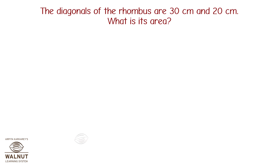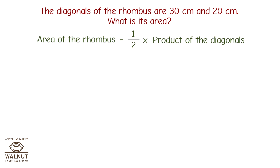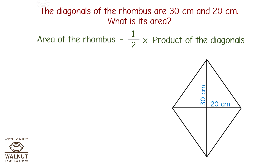Let's take a look at a word problem. The diagonals of a rhombus are 30 cm and 20 cm. What is its area? Area of a rhombus equals half into product of the diagonals, which equals half into 30 into 20, which equals 300 cm². Therefore, the area of the rhombus is 300 cm².